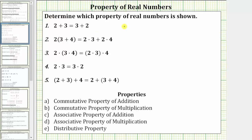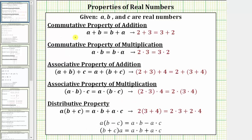We were asked to determine which property of real numbers is shown. Let's begin by reviewing the five properties of real numbers shown below. First, we have the commutative property of addition, which is given as a plus b equals b plus a. The commutative property of addition involves changing the order of a sum.